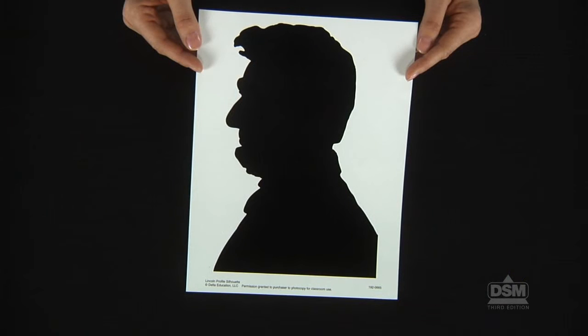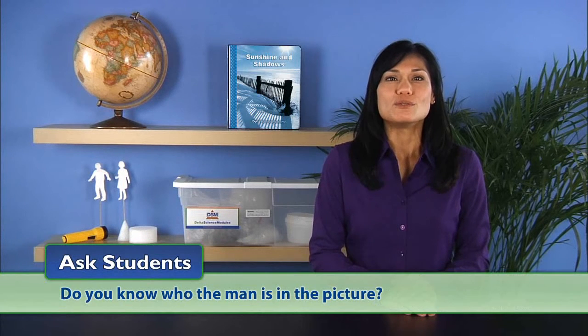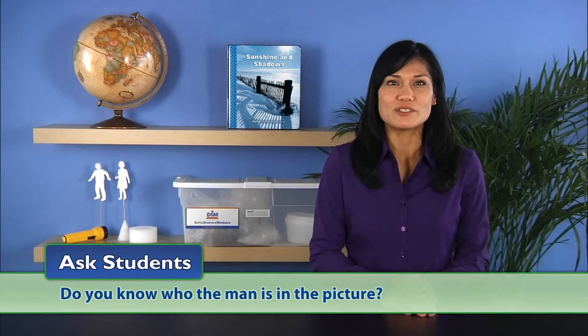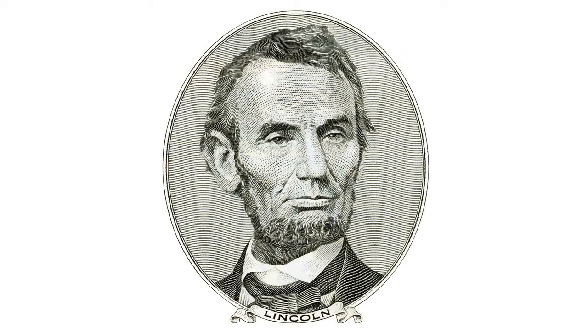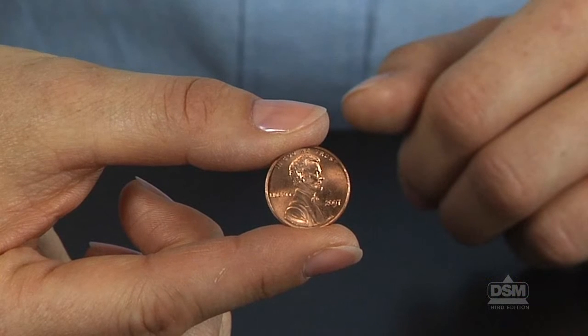Show the students the Lincoln profile silhouette. Ask students, what do you see in this picture? Students should respond that they see the head of a man. If the students do not guess the correct identity, tell them that the man in the picture is Abraham Lincoln, who was once a great president of the United States. Inform students that Lincoln's picture is on the penny and pass pennies around for the students to look at.